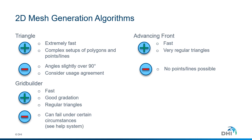Grid Builder, on the other hand, is also a very good mesh generator, giving you as a result a very regular distribution of triangles, but it could fail under certain geometrical circumstances. You can see further details of these possible cases in our online help.